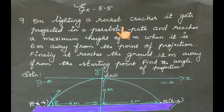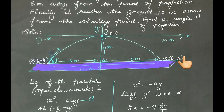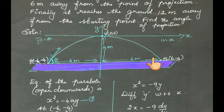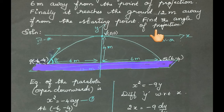It reaches the ground 12 meters away from the starting point. So the total horizontal distance is 12 meters. It makes a parabolic path. Find the angle of projection.